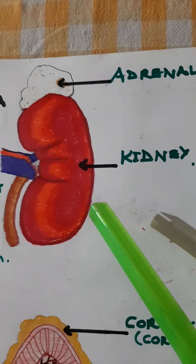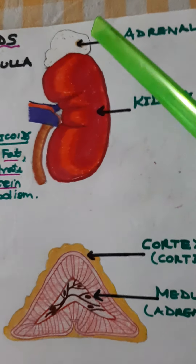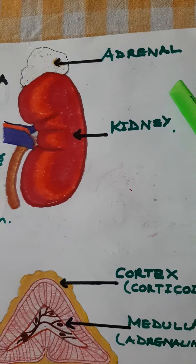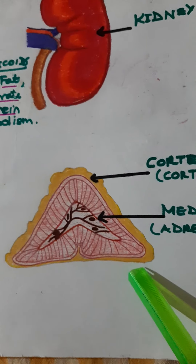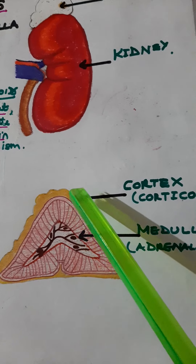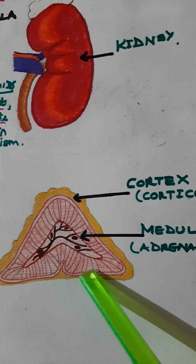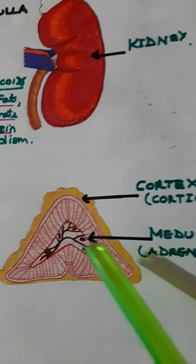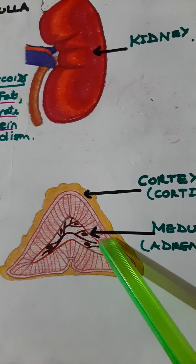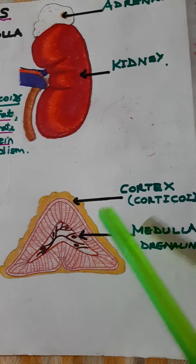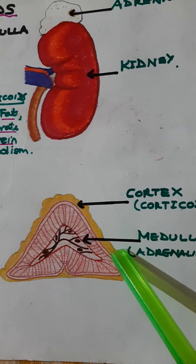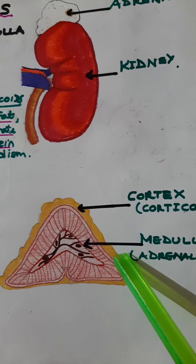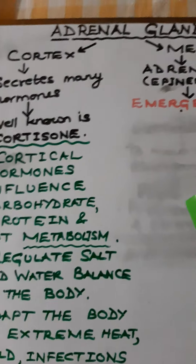The kidney is here and on top of it you can see the adrenal gland. When a cross-section is cut, the adrenal gland has an outer region called the cortex and an inner region called the medulla. The cortex and medulla produce different hormones.